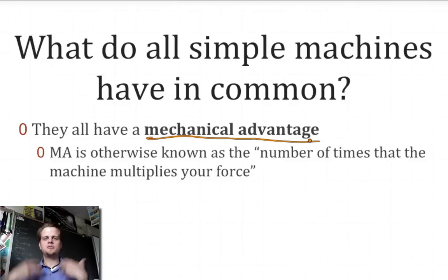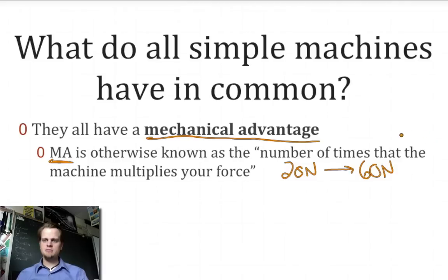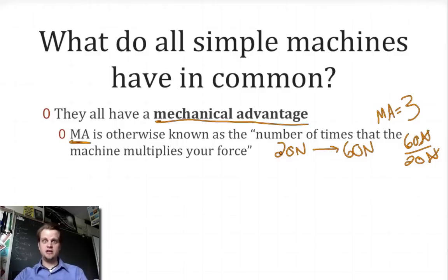In physics, we have to quantify it — put a number to it. The mechanical advantage, abbreviated as MA, is the number of times the machine multiplies your force. For example, if I exert a 20 newton input force and the machine puts out a 60 newton force, my mechanical advantage is three. There are no units because 60 newtons divided by 20 newtons — the newtons cancel out — leaving just the ratio, three.